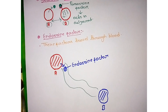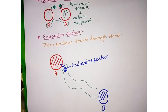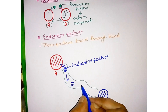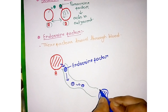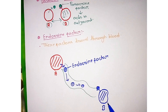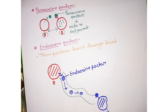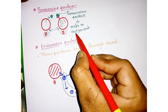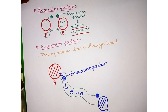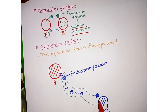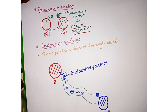Endocrine factors exert their effect in distant cells connected by blood vessels. This endocrine factor travels through blood and binds with a receptor present on cell B and exerts its effect. The difference between paracrine and endocrine factor is that paracrine factors exert their effect in adjacent cells. On the other hand, endocrine factors exert their effect in distant cells, traveling through blood and binding with a receptor present on another cell.